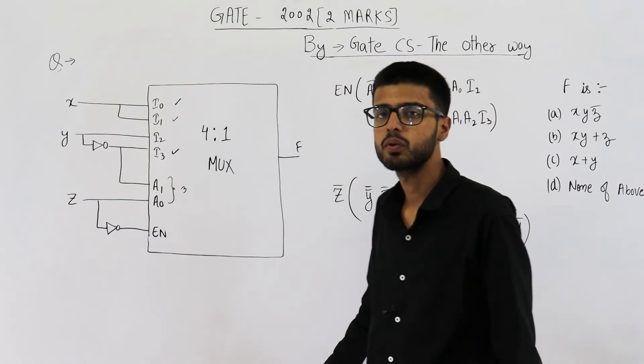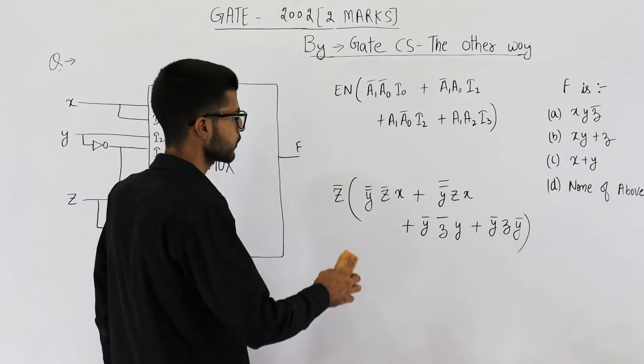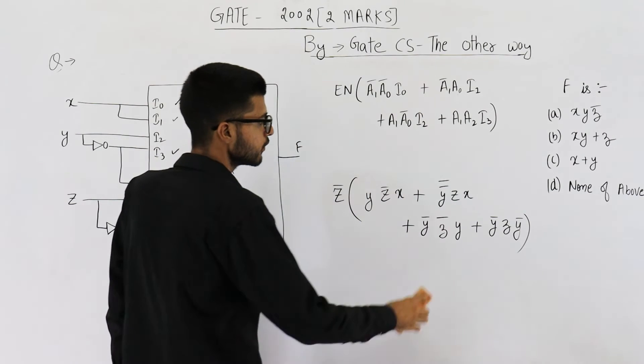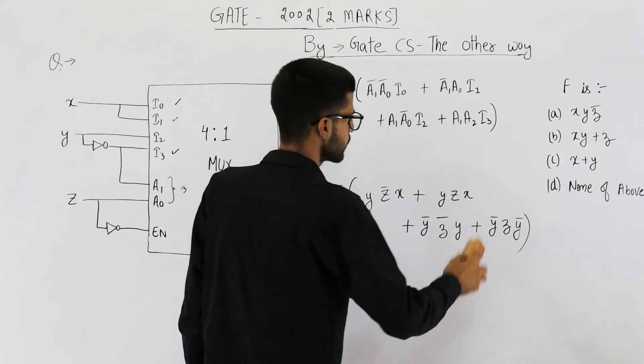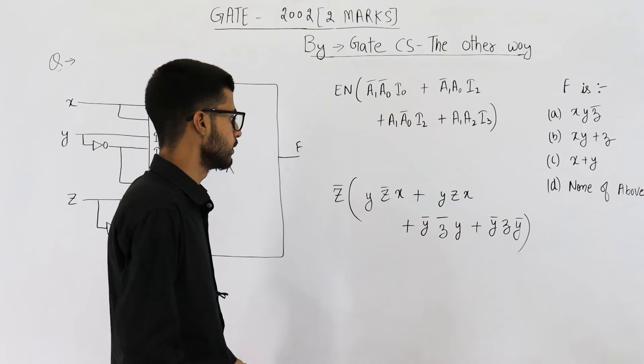Now, you know if a boolean variable is complemented twice, we can ignore the complement. So, Y double complement will be equal to Y only. From here also, I am ignoring this double complement. That's it.